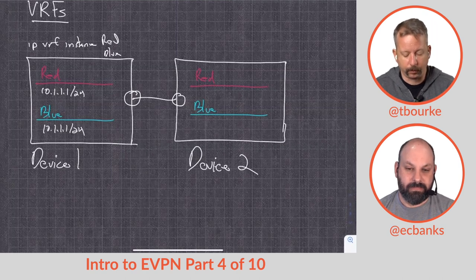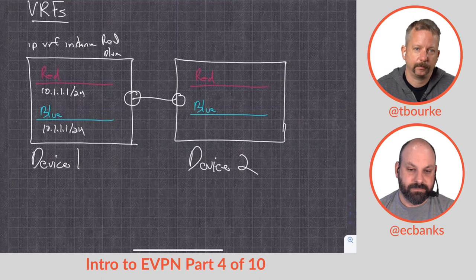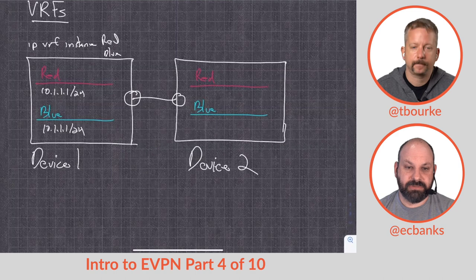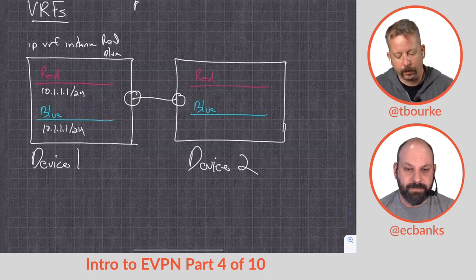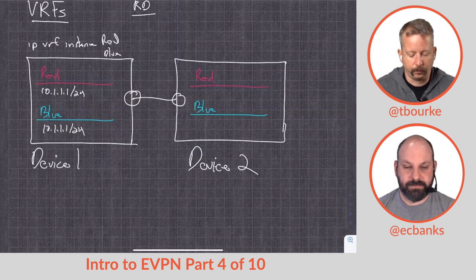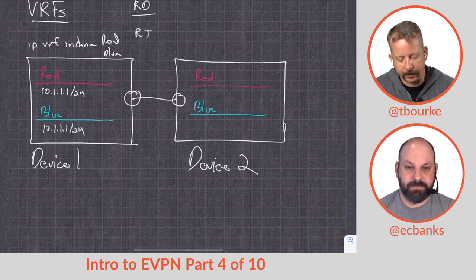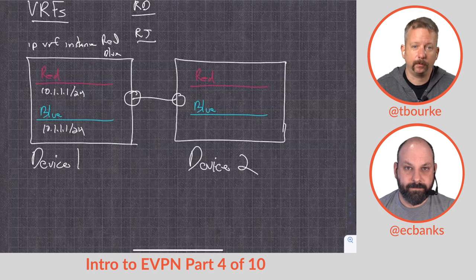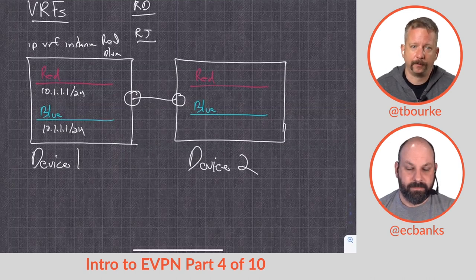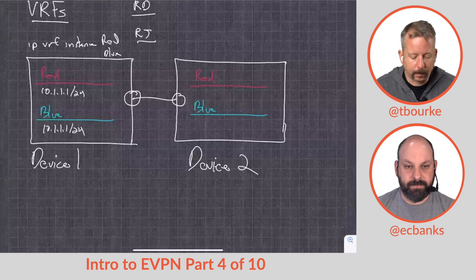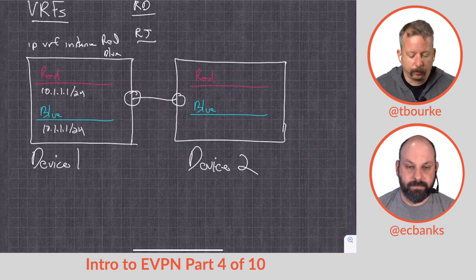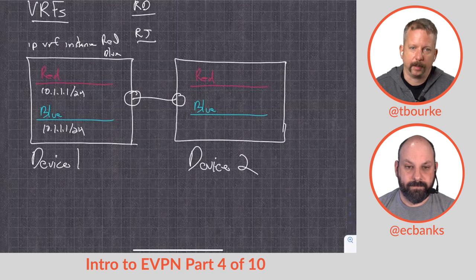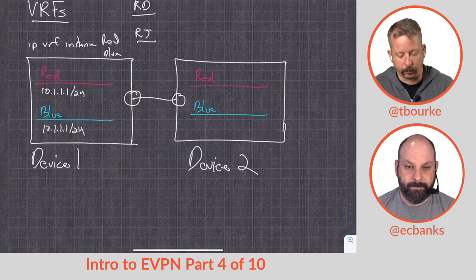So that would be something like VRF lite between devices, but what if we only had one link? In order to exchange routes between these two VRFs, we have route targets and route distinguishers. Right, yeah. So we... what a route distinguisher... The difference between route targets and route distinguishers is a very confusing one because they look exactly the same, they're the same format for the most part. They have two very different purposes.